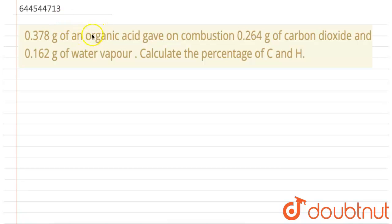Here we are provided with an organic acid that is having a mass of 0.378 grams. On combustion, that is on reaction with oxygen, we get carbon dioxide which is having a mass of 0.264 grams and we have water vapor that is of mass 0.162 grams. What we need to calculate is the percentage of carbon and hydrogen present in the given compound.